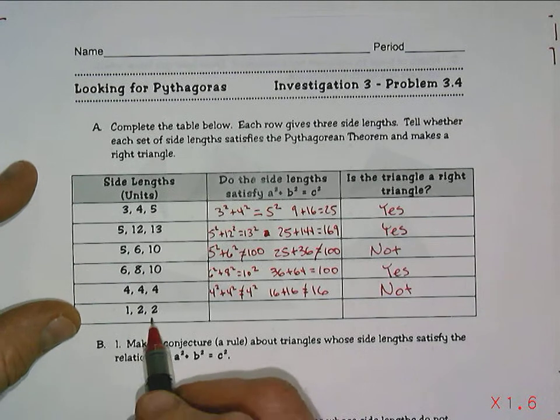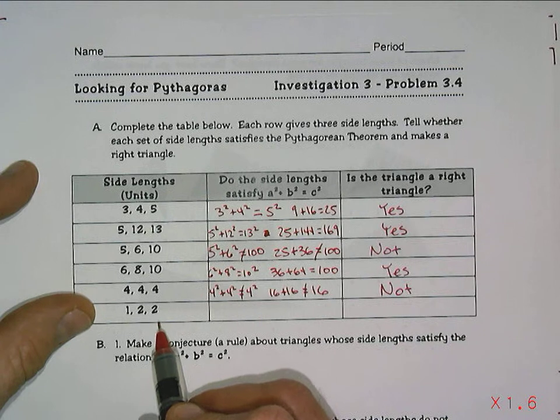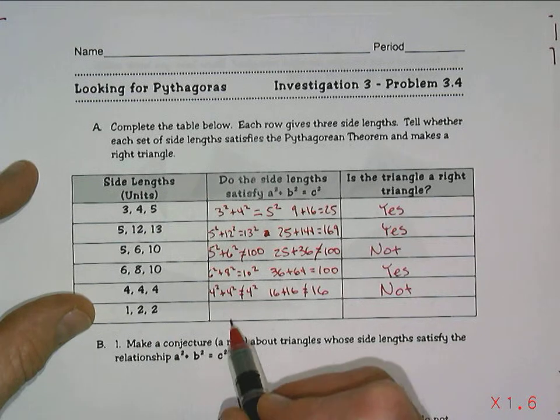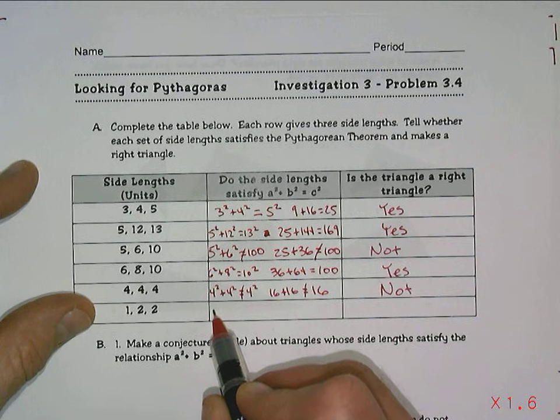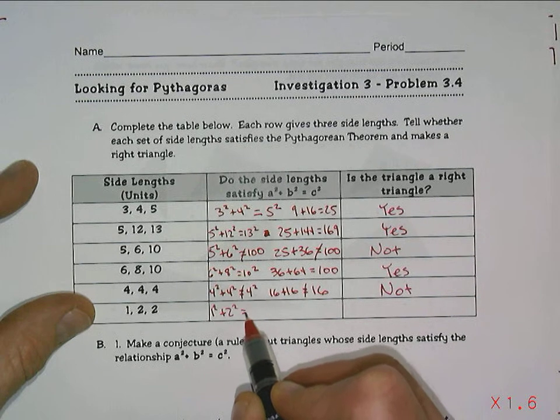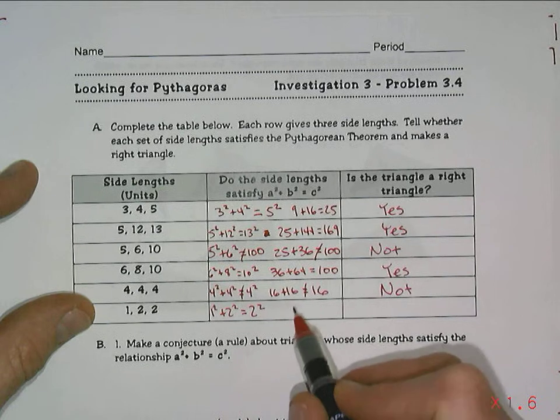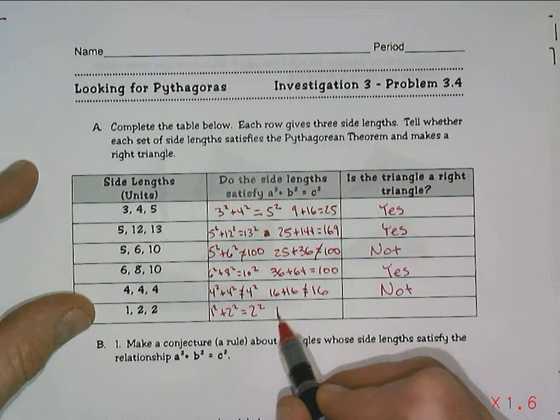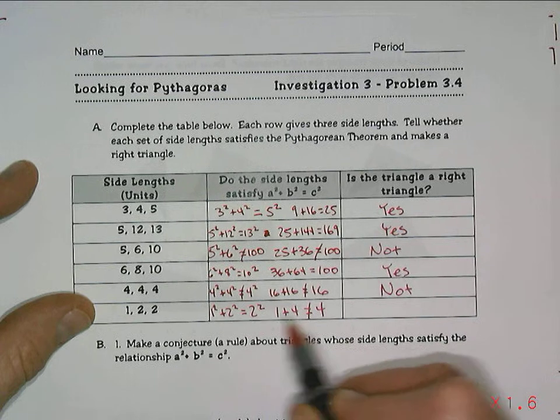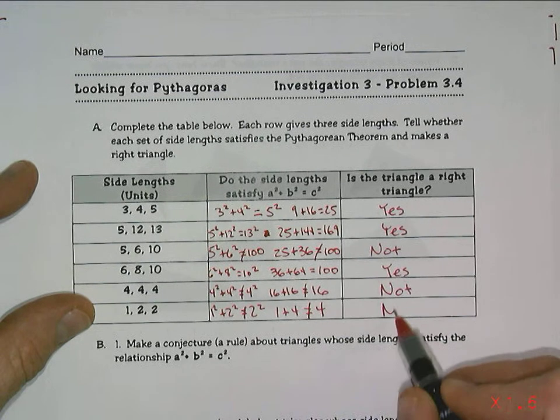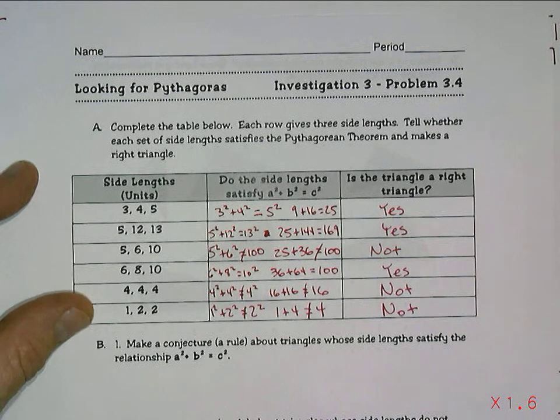How about in this case, where two of them are the same length? Sometimes that might be true, and sometimes it might not be. In this case it is 1 squared plus 2 squared equaling 2 squared. It looks like 1 plus 4 does not equal 4, so this one also is not a right triangle.